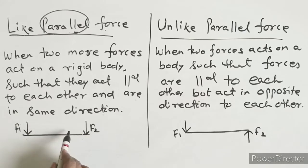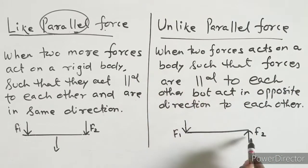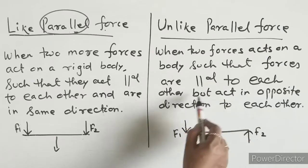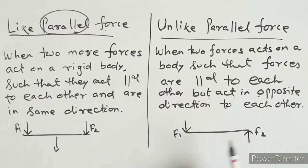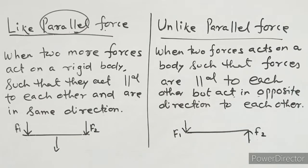If forces are acting equal and opposite, the body can move in one direction only. And here, unlike parallel forces — when two forces act on a body such that the forces are parallel to each other, F1 and F2 are parallel to each other but act in opposite directions to each other. Now, when we describe the couple, we will go for unlike parallel forces.